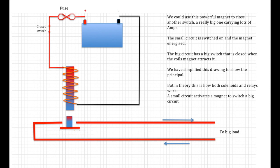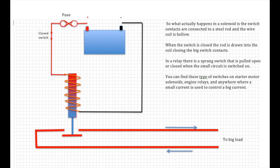We've simplified this drawing just to show the principle. But the theory is how both solenoids and relays work. A small circuit activates a magnet which closes a big switch in a big circuit. So what actually happens in a solenoid is the switch contacts are connected to a steel rod and the wire coil is actually hollow. When the switch is closed, the rod is drawn into the coil, closing the big switch contacts.